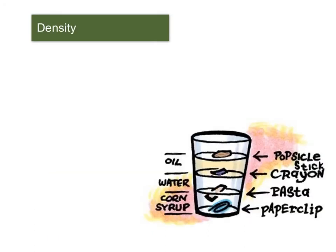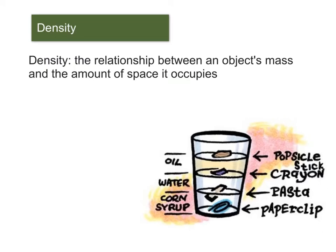The last concept I'm going to talk about is density. And density is the relationship between an object's mass and the amount of space that it occupies or the volume. And so really that tells us about the compactness of the matter and how much is squeezed into a given volume. And mathematically, density can be expressed as mass divided by volume.